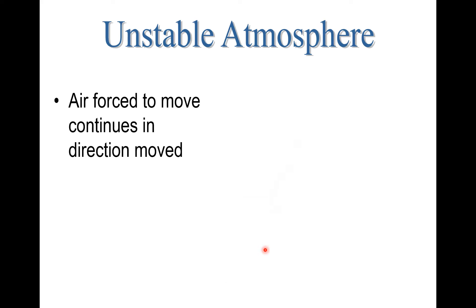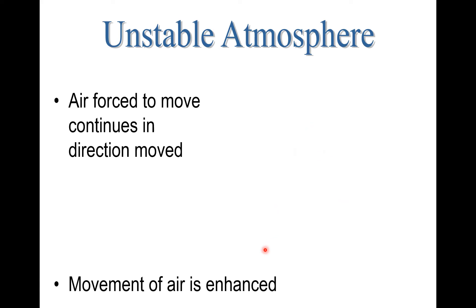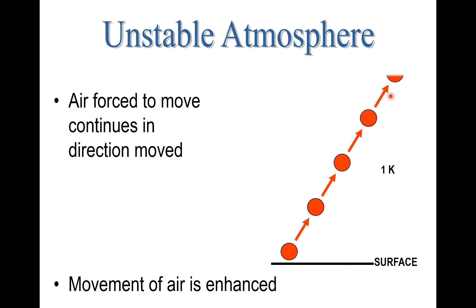With an unstable atmosphere, the air is forced to move in the vertical and continues in the direction in which it was moved. The same example, but now we're going all the way up higher above 1,000 feet above the surface. Notice how this air parcel, represented by the red circle, continues to rise on an unstable weather day — the movement of air is enhanced in an unstable situation.